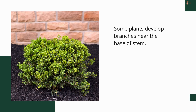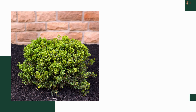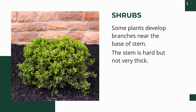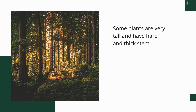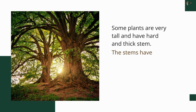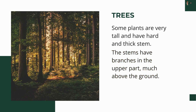Some plants develop branches near the base of the stem, where the stem is hard but not very thick. Such plants are called shrubs. On the other hand, some plants are very tall and have a hard and thick stem. The stems have branches in the upper part, much above the ground. Such plants are called trees.